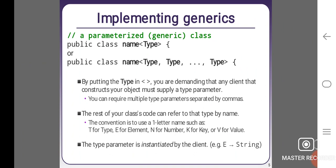A parameterized generic class - implementing generics. Public class Name<Type> or public class Name<Type1, Type2, ..., TypeN>. By putting the type in open and close tags, you are demanding that any client that constructs your object must supply a type parameter. You can require multiple type parameters separated by commas.